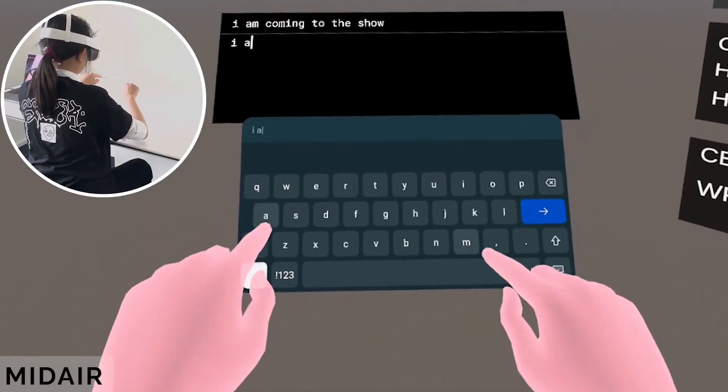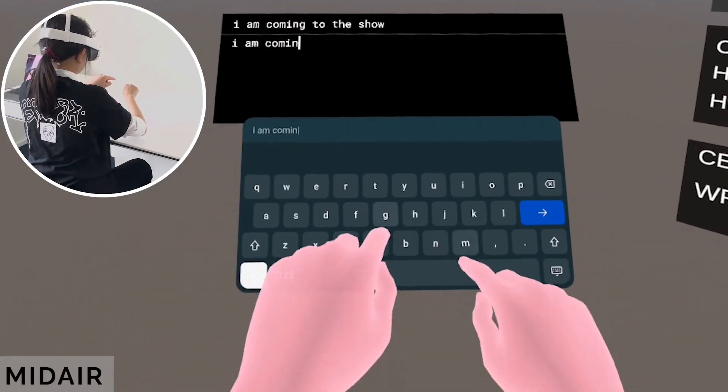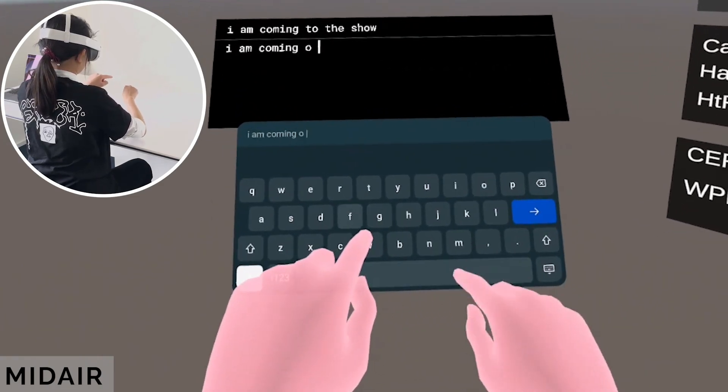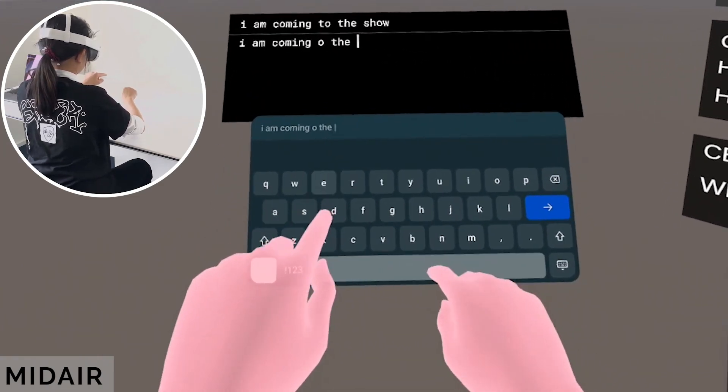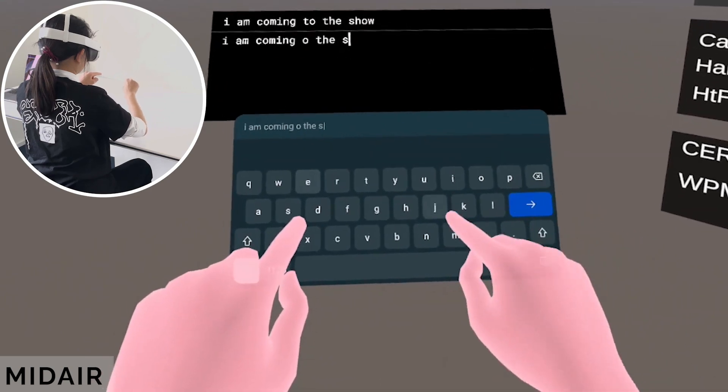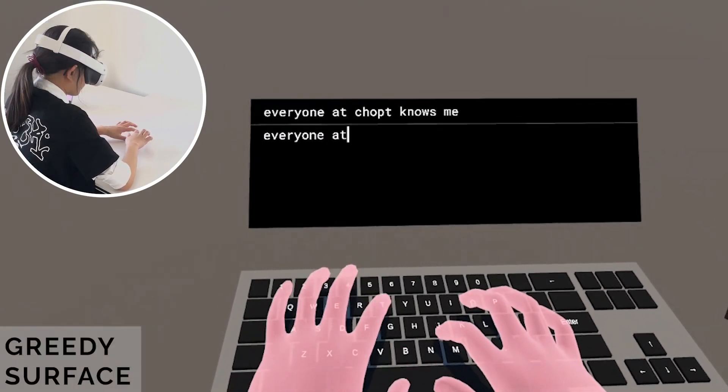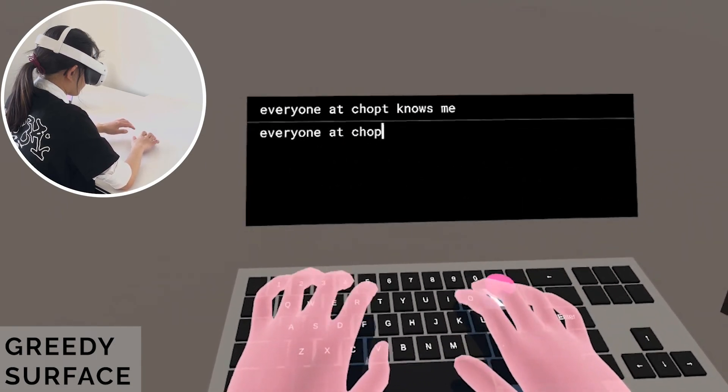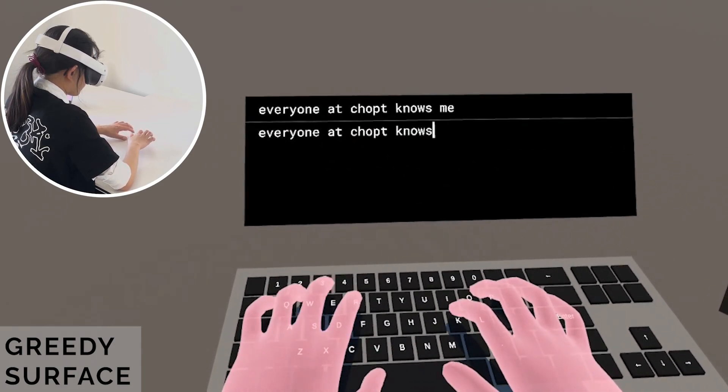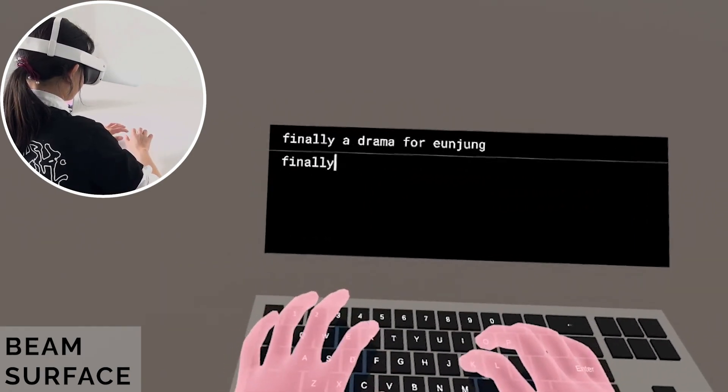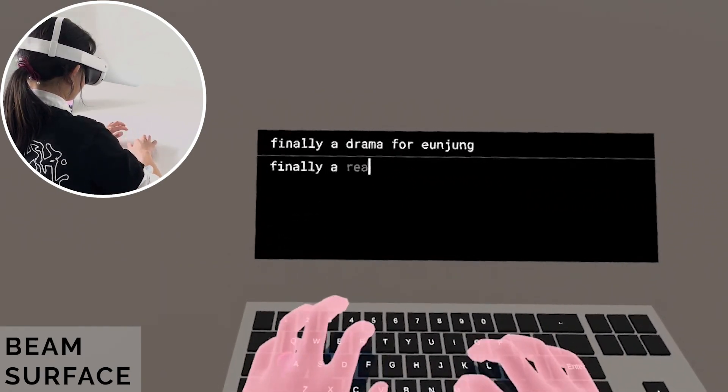In an online text entry evaluation, participants transcribed phrases solely using the hand tracking from the Quest 3. We considered three different conditions: a baseline condition where participants entered text using mid-air typing with their index fingers, a condition leveraging our probabilistic on-surface text entry system using greedy per-character decoding, and a condition using our probabilistic on-surface text entry system with beam search decoding.